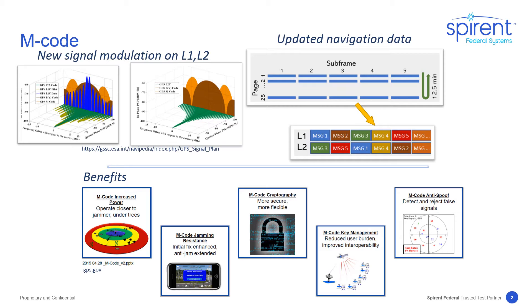M-code is the modernized military signal intended to supersede Y-code over the next few years. It is an additional modulation applied to both GPS L1 and L2 bands, simultaneous with the CA and PY codes. M-code uses a binary offset carrier modulation, which spreads the signal even wider than PY code, improving resistance to jamming.